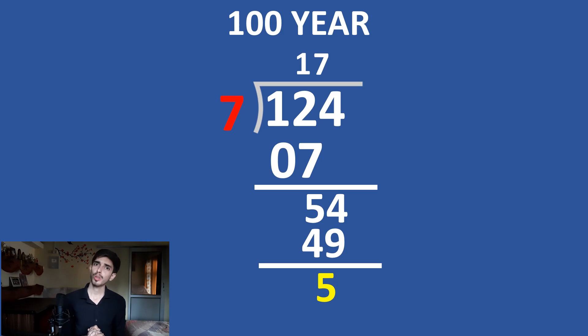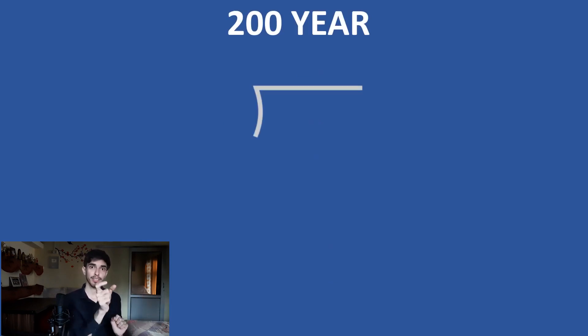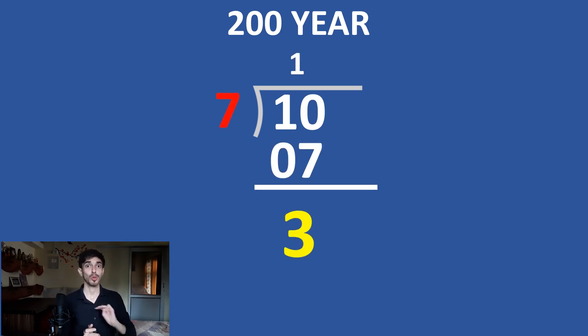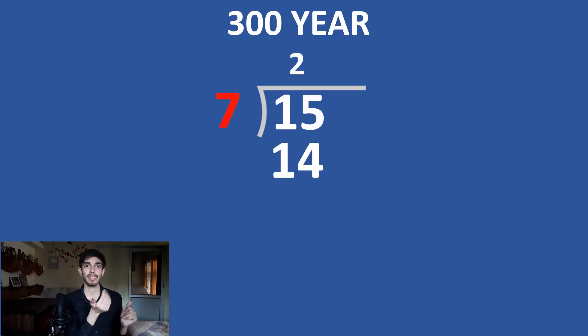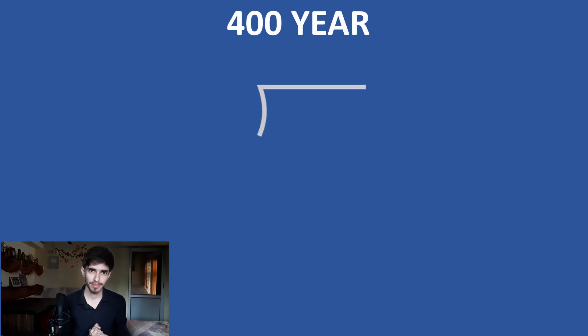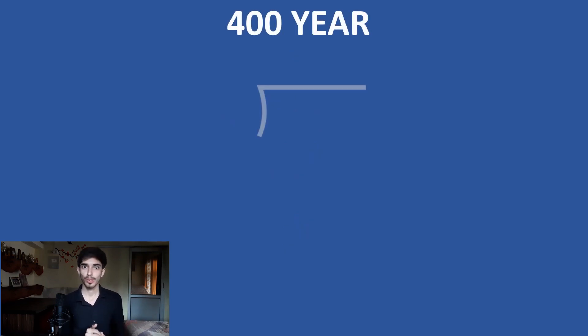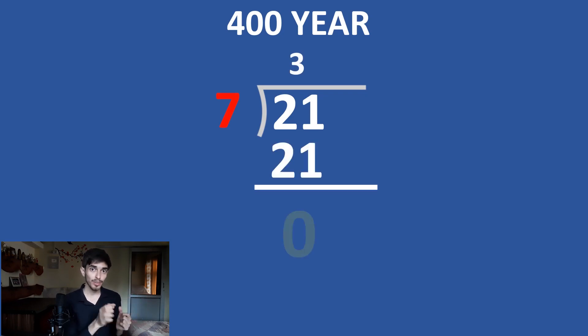For 200 years: another 5, giving 10 total. Divide by 7 — remainder 3, so 3 odd days. For 300 years: 15, divide by 7 — remainder 1, so 1 odd day. For 400 years: we'd expect 20, but 400 is a leap year, so add 1 extra — giving 21 odd days. Divide by 7 — remainder 0. This gives us extremely important information: the Gregorian calendar resets every 400 years.